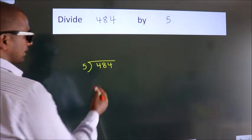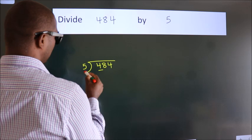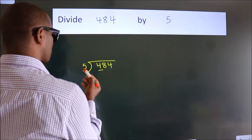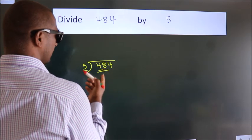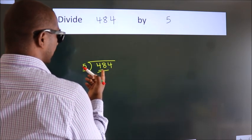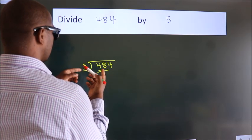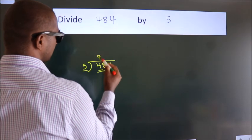Next, here we have 4, here 5. 4 is smaller than 5, so we should take two numbers: 48. A number close to 48 in the 5 table is 5 nines, 45.